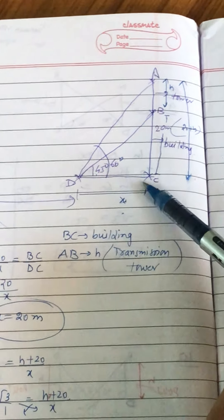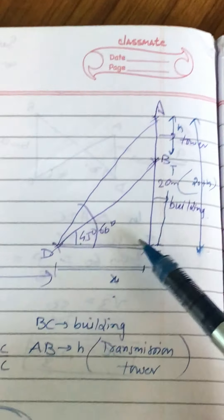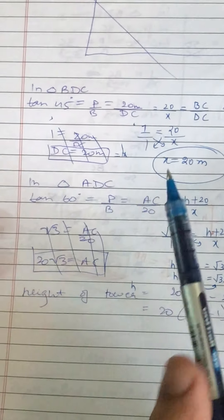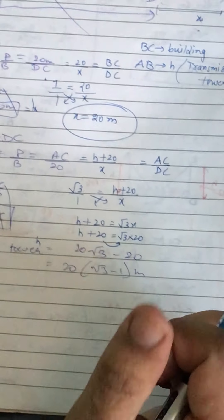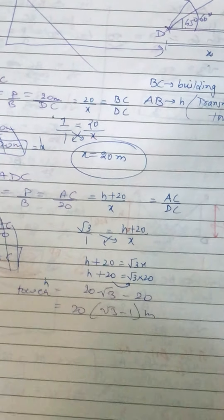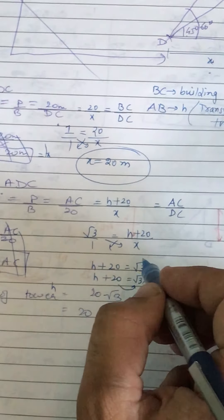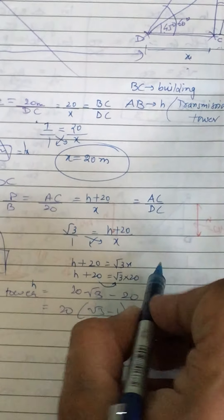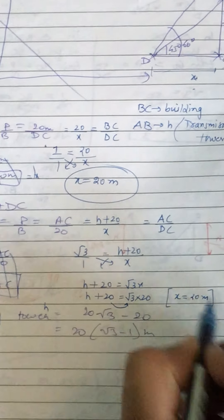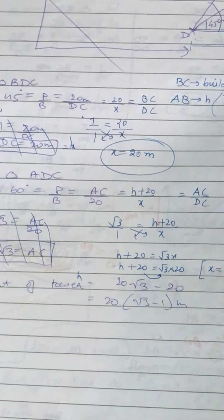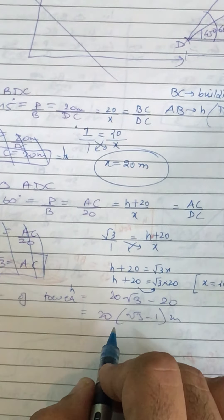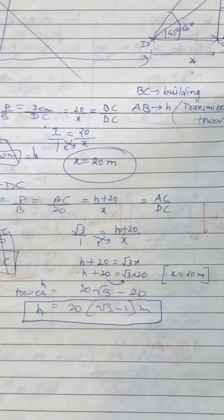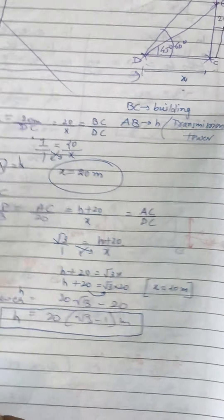Iske baad poore triangle ADC mein lagaiye tan60° equal to P upon B. Perpendicular hai AC aur base hai DC. tan60° is P upon B — perpendicular hai AC aur base DC jo hai woh 20 diya hua hai. AC ki jagah aap h plus 20 likh sakte hain aur base DC ki jagah x. tan60° ki jagah root 3, AC ki jagah h plus 20 — root 3 into x. X ki jagah 20 put kijiye, h plus 20 aagya 20 root 3. H ki value chahiye toh h = 20 root 3 minus 20 = 20(root 3 minus 1) meter. So this was question number 7.